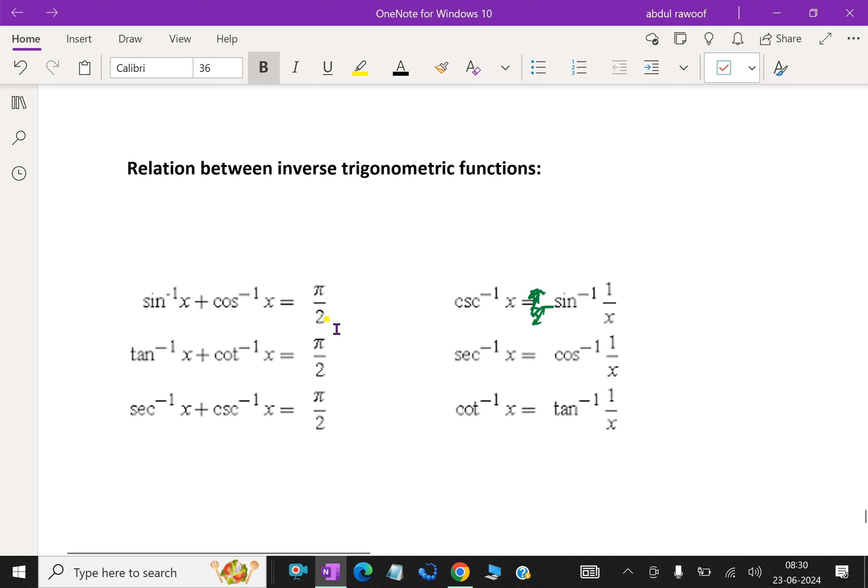Sin inverse x plus cos inverse x is pi by 2. Secant inverse and cosecant inverse is also pi by 2.